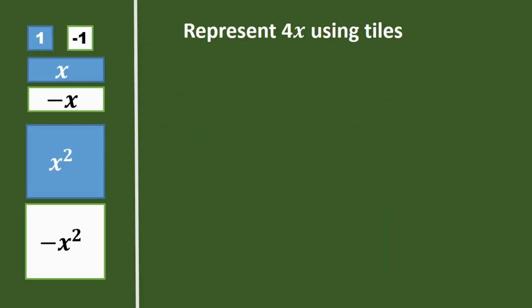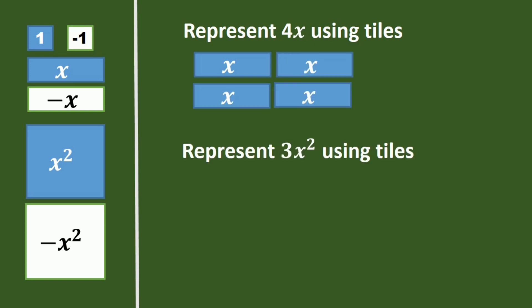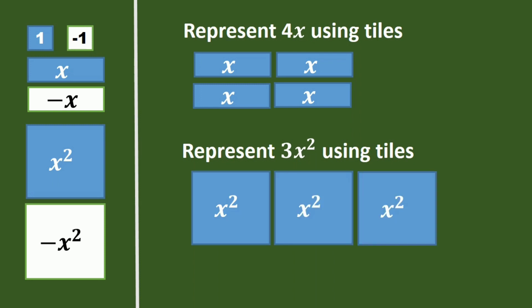Represent 4x using tiles. 4x means there will be 4 positive x tiles. Now represent 3x squared using tiles. There will be 3 x-squared tiles: 1, 2, 3. So that's 3x squared.